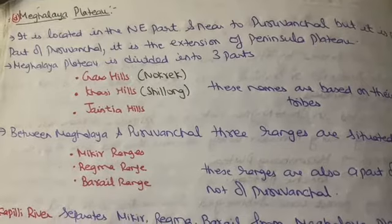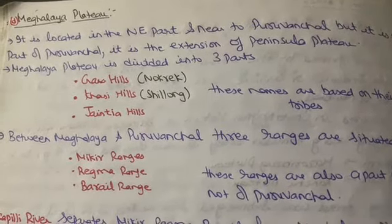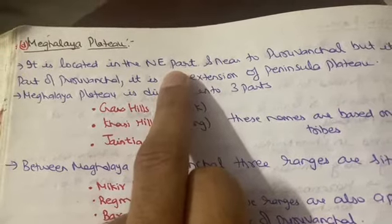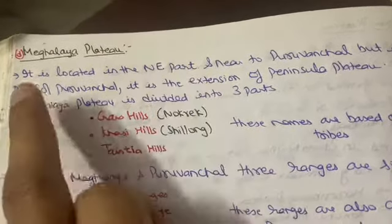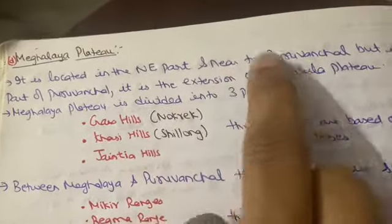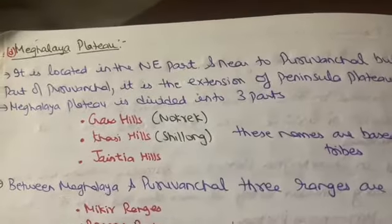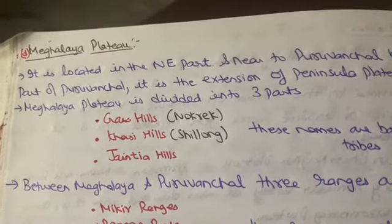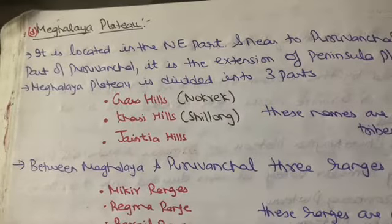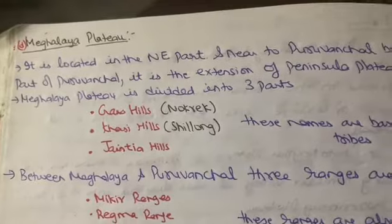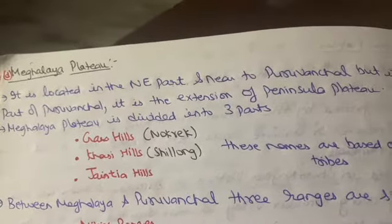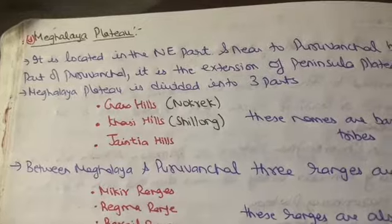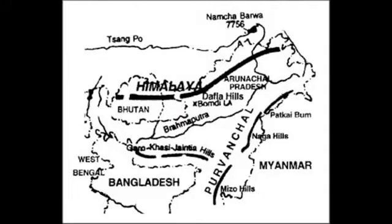Meghalaya Plateau is located in the north-east part of India, where Meghalaya state is situated. It lies near to the Puruvanchal. Puruvanchal lies on the right side of the Meghalaya Plateau — I will show you on the map so you can see how Puruvanchal is separated from the Meghalaya Plateau. Puruvanchal is an extension of the Himalayan ranges, and the last part of that extension is called Puruvanchal.